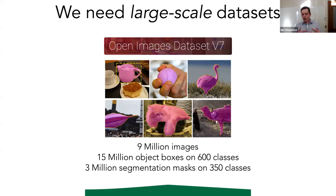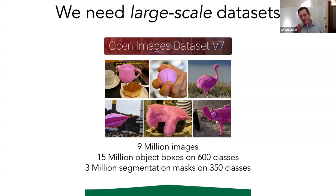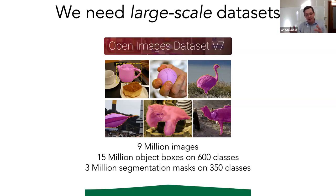If we look at computer science in general, there are lots of big datasets for general scenes. The Google Open Images dataset is one of the largest, with 9 million images and 50 million annotated bounding boxes and 3 million segmentation masks across a very large number of classes. If you contrast this with many of our plant datasets — typically thousands of images with perhaps just one class, like annotated wheat heads — you can see there's quite a disparity.